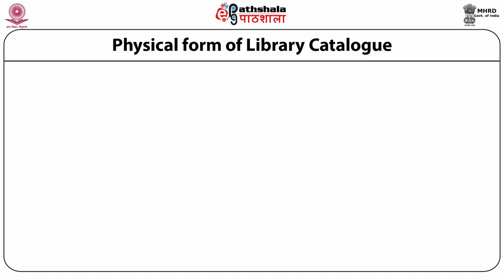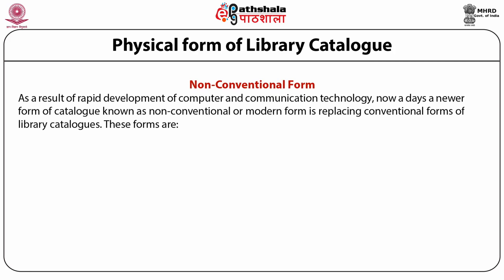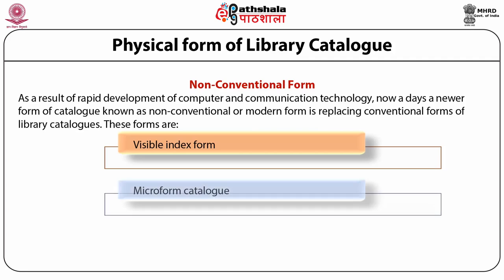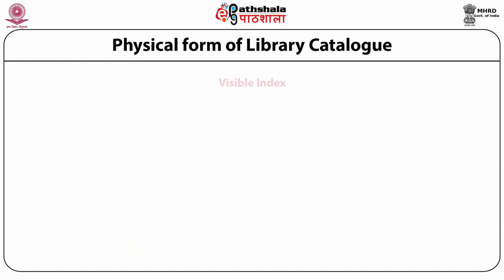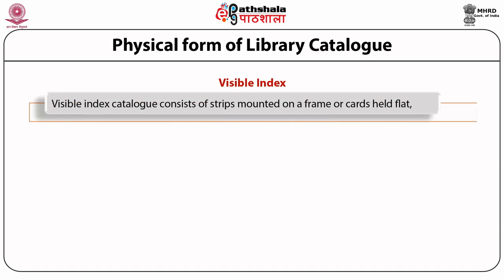Non-conventional physical forms of the library catalog are the result of rapid development of computer and communication technology. These are: first, visible index form; second, micro form catalog; and third, machine-readable catalog. The visible index catalog consists of strips mounted on a frame or cards held flat, hinged, with the width of each card projecting so as to make the heading visible.